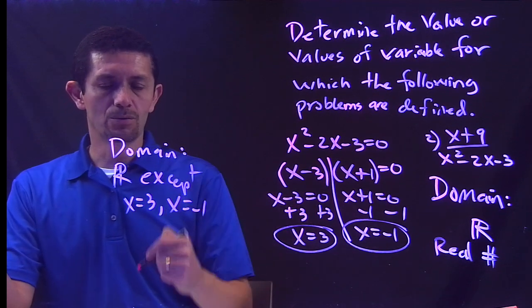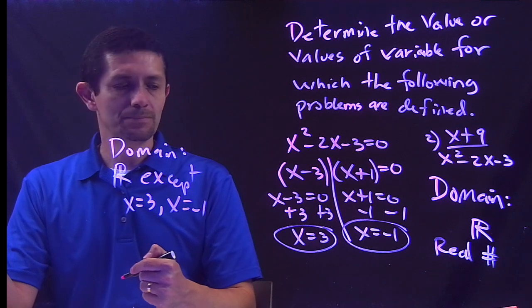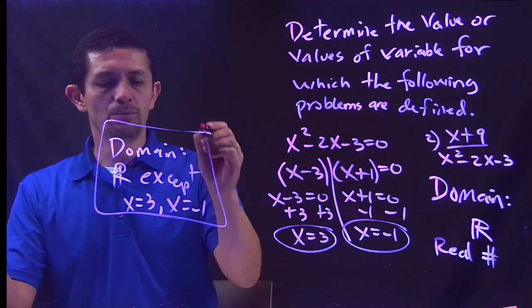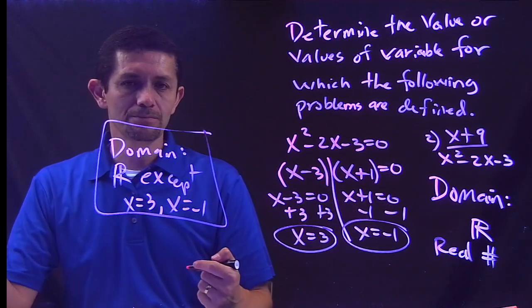Except when x equals 3 and when x equals negative 1. I don't want those values, that's why I write except. And this will be the domain for the second function.